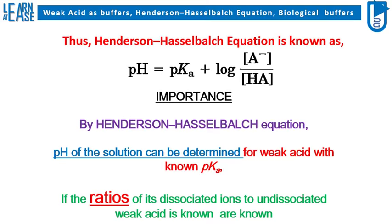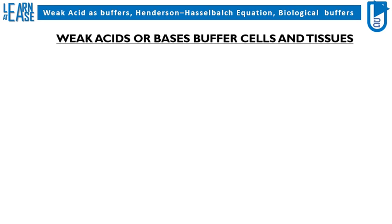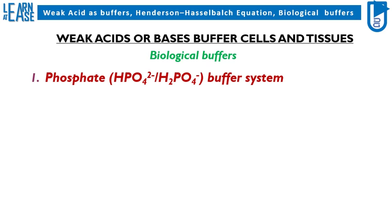Now let me explain the role of biological buffers in living systems. Weak acids or bases buffer cells and tissues; such buffers are known as biological buffers. First, the phosphate HPO4²-/H2PO4- buffer system. This system functions at the cytoplasm of all cells, intracellularly. The intracellular pH of most cells is maintained in the range between 6.9 and 7.4.